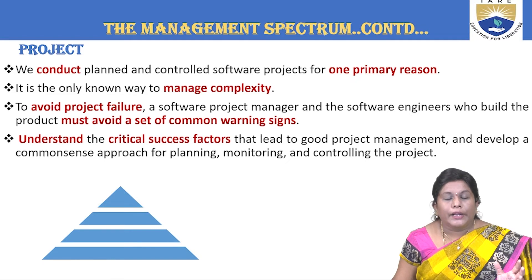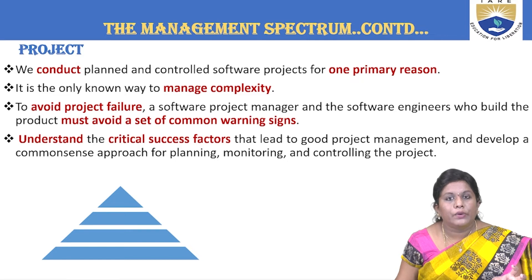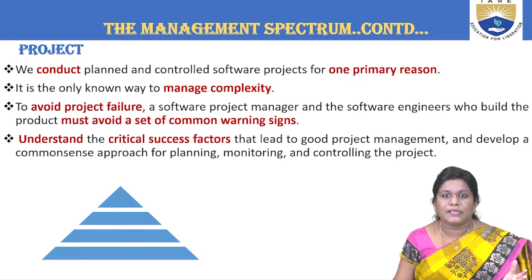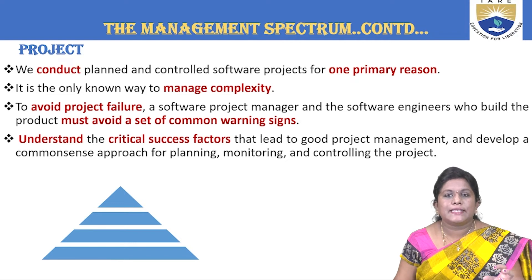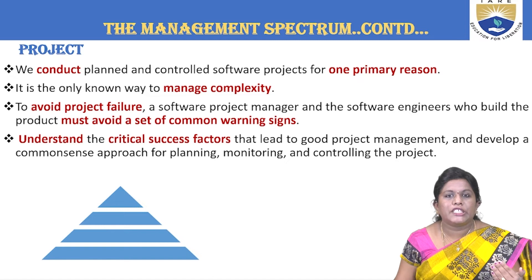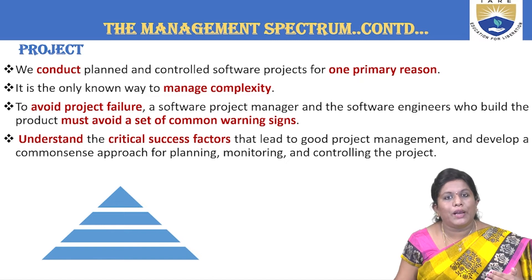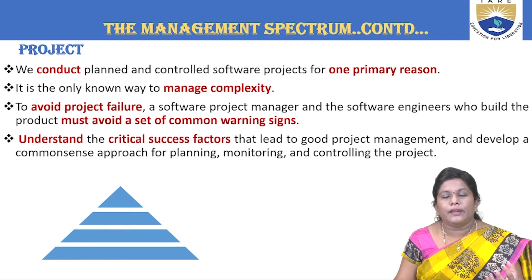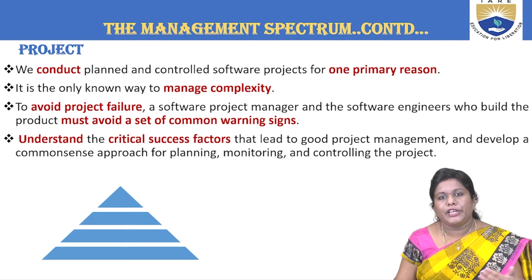The last point is understanding crucial success factors — how do you meet success? Only when planning, monitoring, and controlling the project is in your hands. If these three main factors go well, the success rate of your project will improve. As the diagram depicts, you start with many basic things and ultimately reach the topmost point — the final product — by fitting the right people with the right knowledge and checking their progress through scheduling and milestones.